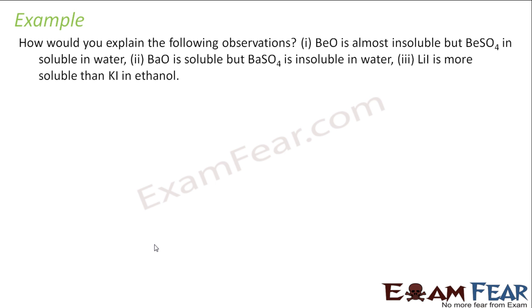How would you explain the following observations? BeO is almost insoluble, BeSO4 is soluble in water. BaO is soluble but BaSO4 is insoluble. And LiI is more soluble than KI in ethanol. In case of BeO, let's take this example. BeO - both the oxygen and beryllium molecules are almost same size, so they have higher lattice enthalpy. It is high.